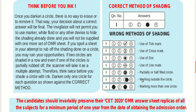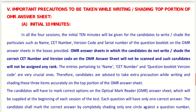Candidates should preserve the CET 2020 OMR answer sheet replica for a minimum period of one year from the date of obtaining the admission order, in case of any discrepancy or cross-checking. Even after admission, you should not lose this sheet — maintain it for a minimum of one year.